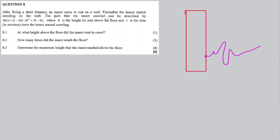The path of the insect's crawl can be described by this equation, where h is the height and t is the time in minutes since the insect started crawling. The height traveled by the insect is modeled by this equation. This is the ground, and this is the wall — I'm just giving you a visual picture.